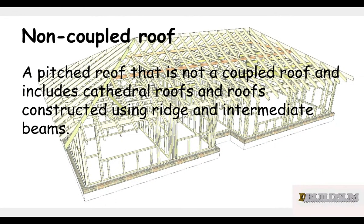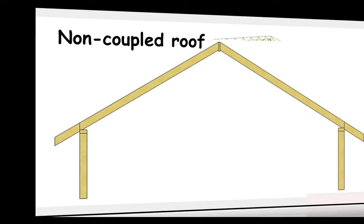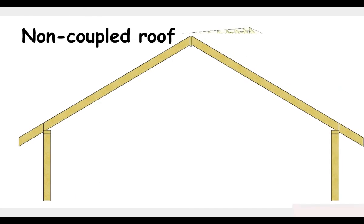A non-coupled roof is a pitched roof that is not a coupled roof, and includes cathedral roofs and roofs constructed using ridge and intermediate beams. Basically, there are no ties in between, such as a cathedral roof — that's a non-coupled roof.